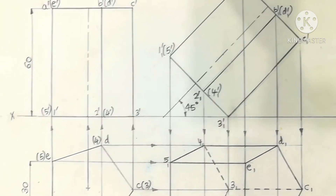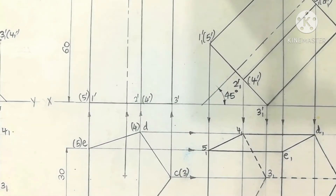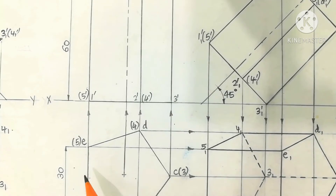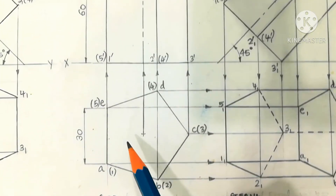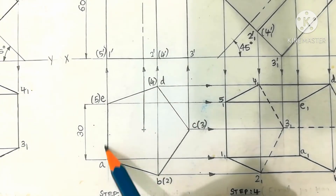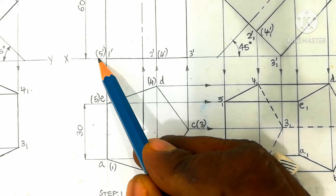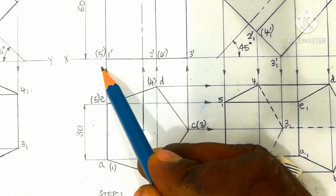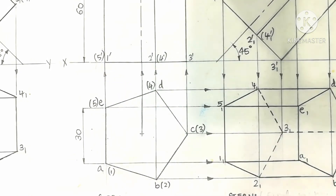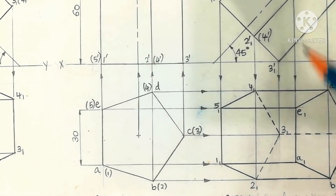You can also follow one more procedure. In the edge called AE, AE is perpendicular to the HP in the simple position — 90 degrees. This angle will be 90 degrees. If you work there, you will find the corresponding front view to top view.